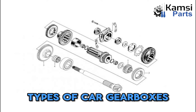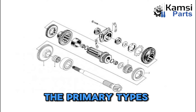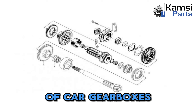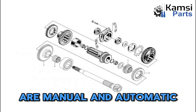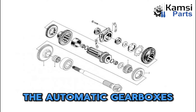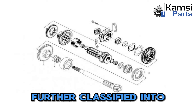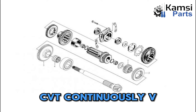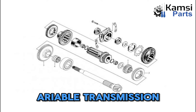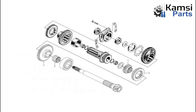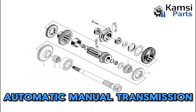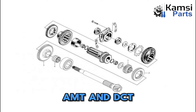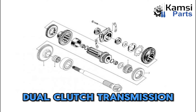Types of car gearboxes: the primary types of car gearboxes are manual and automatic. The automatic gearbox is further classified into torque converter, CVT (continuously variable transmission), AMT (automated manual transmission), and DCT (dual clutch transmission).